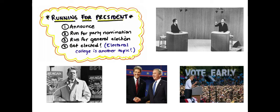This screencast is about running for president. There are typically four phases. You have to announce that you want to be president and go through requirements by the Federal Election Commission to certify that you're going to be a candidate on the ballot. Number two, you run for the party's nomination. Number three, run in the general election. And then hopefully number four, be elected.